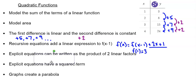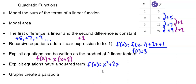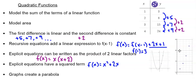Explicit equations can be written as the product of two linear factors: x and (x + 2) being multiplied together. Explicit equations will have a squared term when written in standard form, and the graphs create a parabola. Here's a small graph of the points from the table — if we looked at the shape the graph makes, this is a parabola. That's it for this video. Thank you for watching.